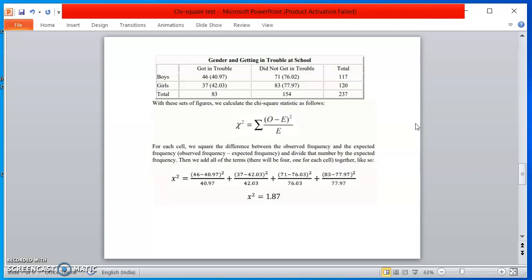Similarly, for who did not get in trouble, we need to keep the score for boys and girls. And then after doing all this, after making all calculation, I got the score. Chi-square equal to 1.87. And this is our chi-square score.